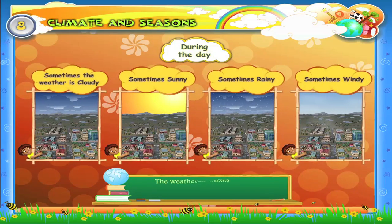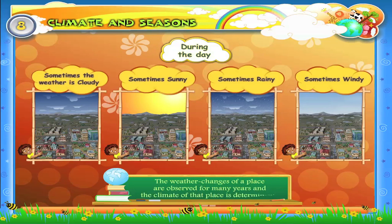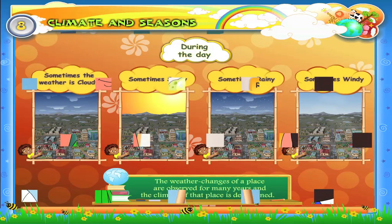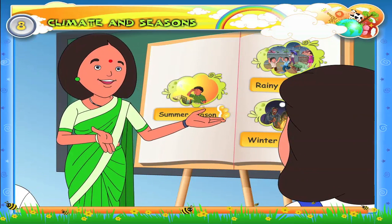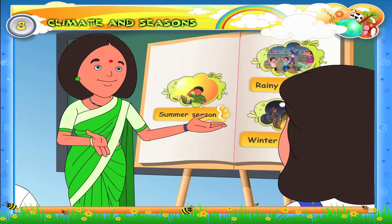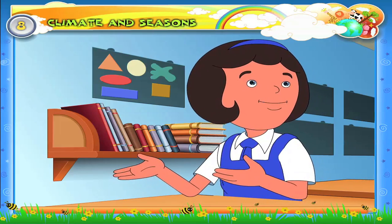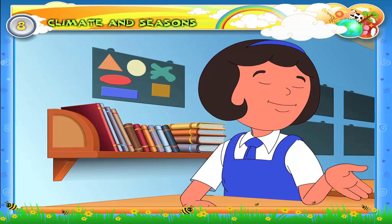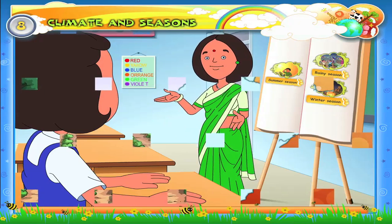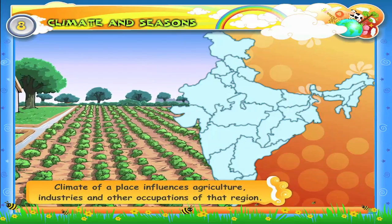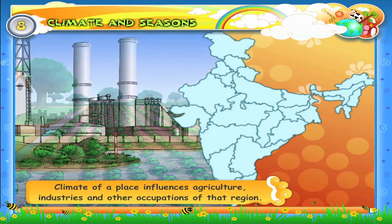The weather changes of a place are observed for many years and the climate of that place is determined. The climate of a place does not change suddenly. Human life is very much influenced by climate. A student asks: how does climate influence human life? Climate of a place influences agriculture, industries, and other occupations of that region.